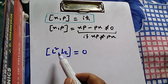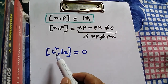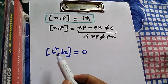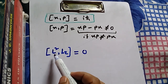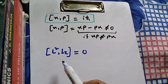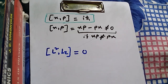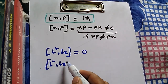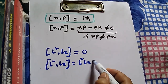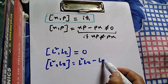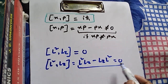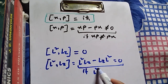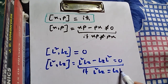So while the commutation of X and P gives us iℏ, the commutation of L-squared and Lz gives us zero. When it is zero, it means that L-squared and Lz commute with each other. We can also write: L²Lz minus LzL² equals zero, which is possible only if L²Lz equals LzL².